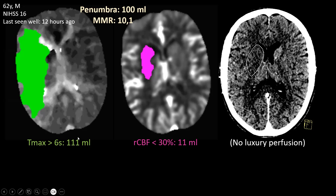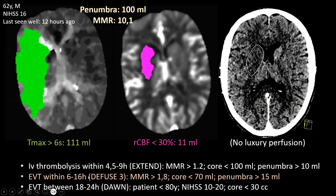We can measure the penumbra: 111 minus 11 equals 100 milliliters, with a mismatch ratio of 10. According to the EXTEND criteria, intravenous thrombolysis can be given between 4.5 and 9 hours if mismatch ratio >1.2 (met), core <100 mL (met), and penumbra ≥10 mL (met) — but this patient presents at 12 hours, too late. According to the DEFUSE 3 criteria for endovascular thrombectomy with large vessel occlusion: mismatch ratio >1.8 (met), core <70 mL (met), penumbra >15 mL (met) — and the patient is within the 6 to 16 hour window.